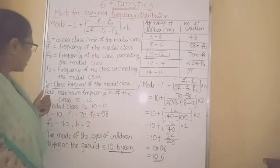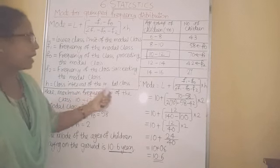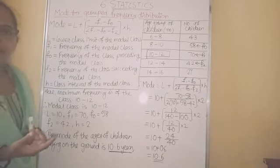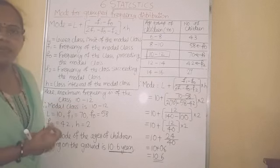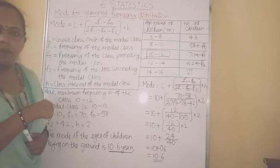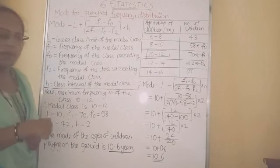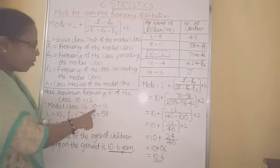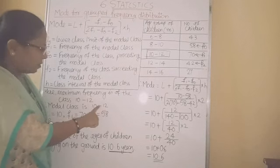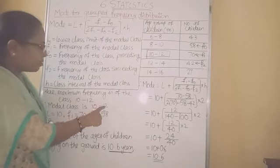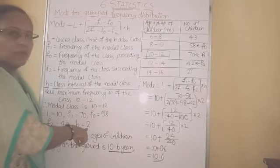The last value is H — H means class interval of the modal class, also called class width. Upper class limit minus lower class limit. The modal class is 10 to 12, upper class limit is 12, lower class limit is 10. So 12 minus 10 equals 2. H is equal to 2.